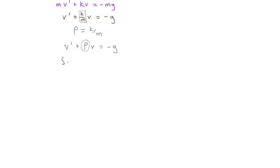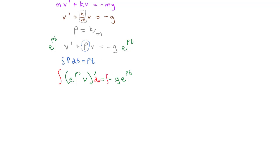With linear equations, we integrate ρ dt to get ρt, then multiply both sides by the integrating factor e^(ρt). The left side becomes the derivative of e^(ρt)·v, equal to -g·e^(ρt) on the right. Integrating both sides, e^(ρt)·v equals -g·e^(ρt)/ρ plus a constant. Dividing both sides by e^(ρt), we get v = -g/ρ + C·e^(-ρt).